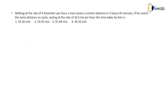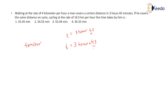Walking at a speed of 4 kilometers per hour, a man covers a certain distance in 3 hours 45 minutes. The time is 3 hours 45 minutes. We need to convert 45 minutes into hours: 3 hours plus 45/60, which simplifies to 3 plus 3/4.